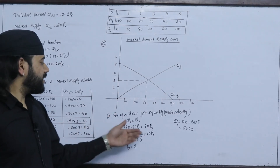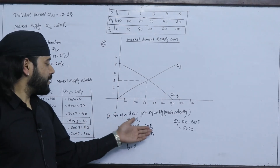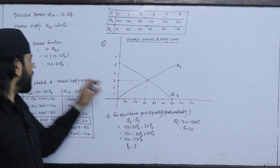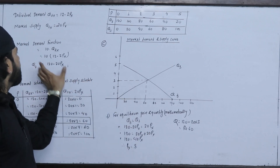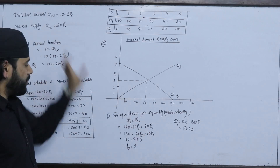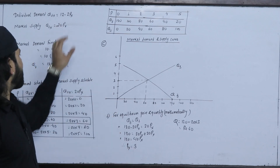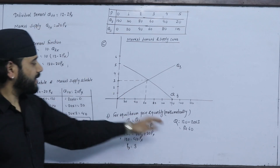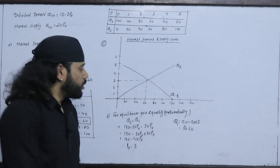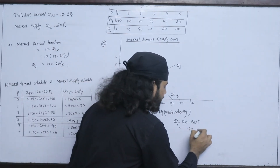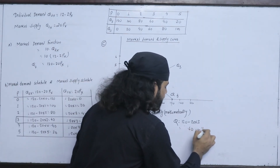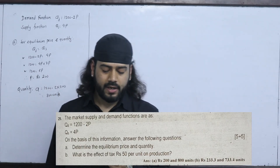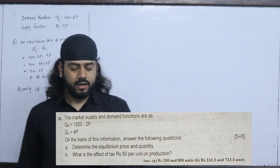Mathematically, setting QD = QS: 120 - 2PX = 20PX. Solving, 120 = 22PX — but keeping in the correct market total, PX = 6 and Q = 60 units. This is the market equilibrium price and quantity based on the demand and supply functions.